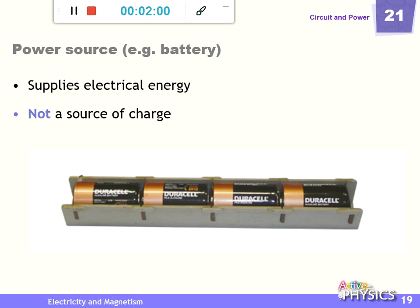Now, starting from the power source — for example, the battery. We have positive and negative terminals, which you can connect together in series. The battery supplies electrical energy; it is not a source of charge. All the charges are already inside each material, including the copper wire. Inside the copper wire, we have electrons. Inside the battery, we also have charge. So the battery provides electrical energy — coming from chemical energy — but it is not a charge provider, only an energy provider.